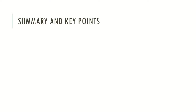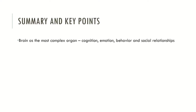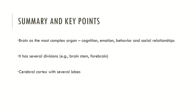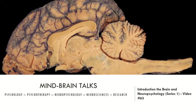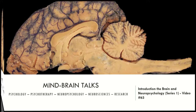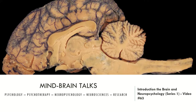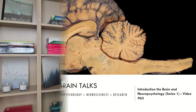Let's take a brief summary. The brain is defined as the most complex organ — it allows humans to have cognition, emotion, behavior, and social relationships. It has several divisions: the brainstem, the forebrain, and the cerebral cortex with its several lobes. Neuropsychology is the scientific discipline that studies mind, brain, and behavior. We have a functional brain that allows us to dream, think, and fantasize — it is the biological organ that allows us to take a step further in the animal hierarchy.